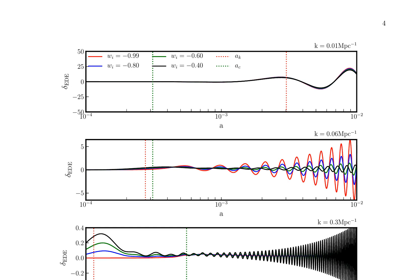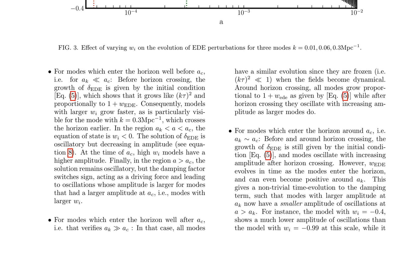In the region a greater than AC, the solution remains oscillatory, but the damping factor switches sign, acting as a driving force and leading to oscillations whose amplitude is larger for modes that had a larger amplitude at AC, i.e., modes with larger W_EED. For modes that enter the horizon well after AC, such as k equals 0.01 Mpc inverse 1, all modes have a similar evolution since they are frozen when the fields become dynamical. Around horizon crossing, all modes grow proportionally to 1 plus W_EED, while after horizon crossing they oscillate with increasing amplitude.